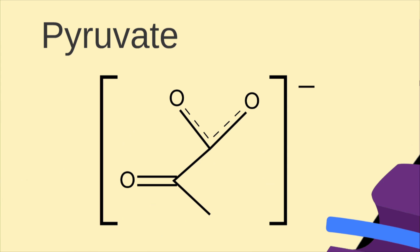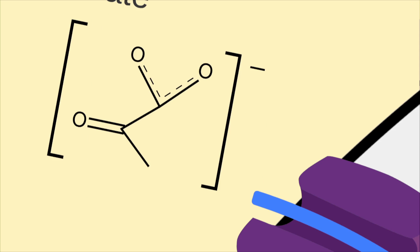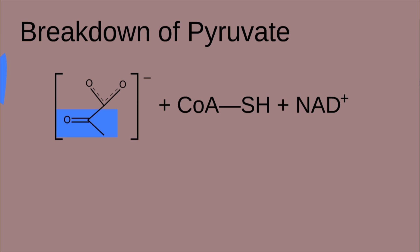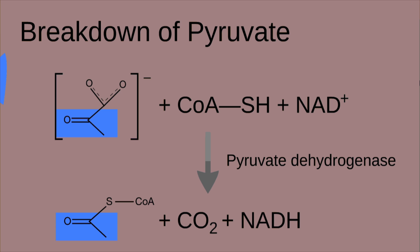After glycolysis, the pyruvate products travel from the cytosol into the mitochondria, passing through membrane proteins into the mitochondrial matrix. This is where the breakdown of pyruvate occurs. The enzyme pyruvate dehydrogenase transfers an acetyl group from pyruvate, shown in the blue box, to CoA. The rest of the pyruvate becomes carbon dioxide byproduct.